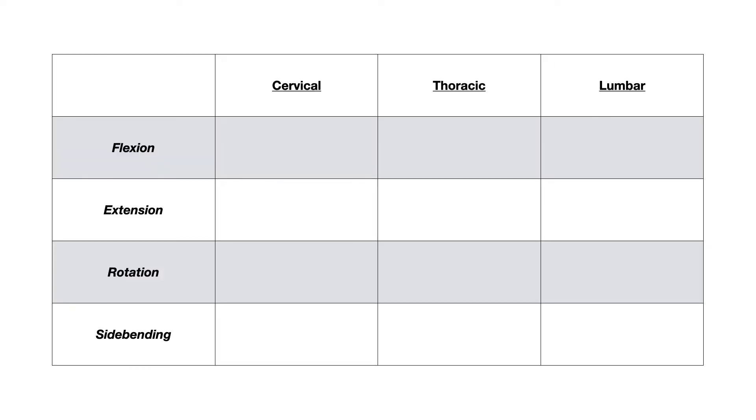So for spinal range of motion, it's actually kind of simple. You just want to break it down into the cervical spine, the thoracic spine, and the lumbar spine. And then for each spinal segment, you just need to know the degrees of motion that you can get in the various positions, including flexion, extension, rotation, and side bending. So let's just kind of rapidly run through this.